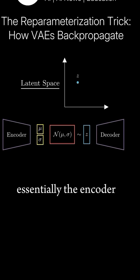Essentially, the encoder transforms the input data into the parameters of this Gaussian, namely the mean mu and variance sigma.